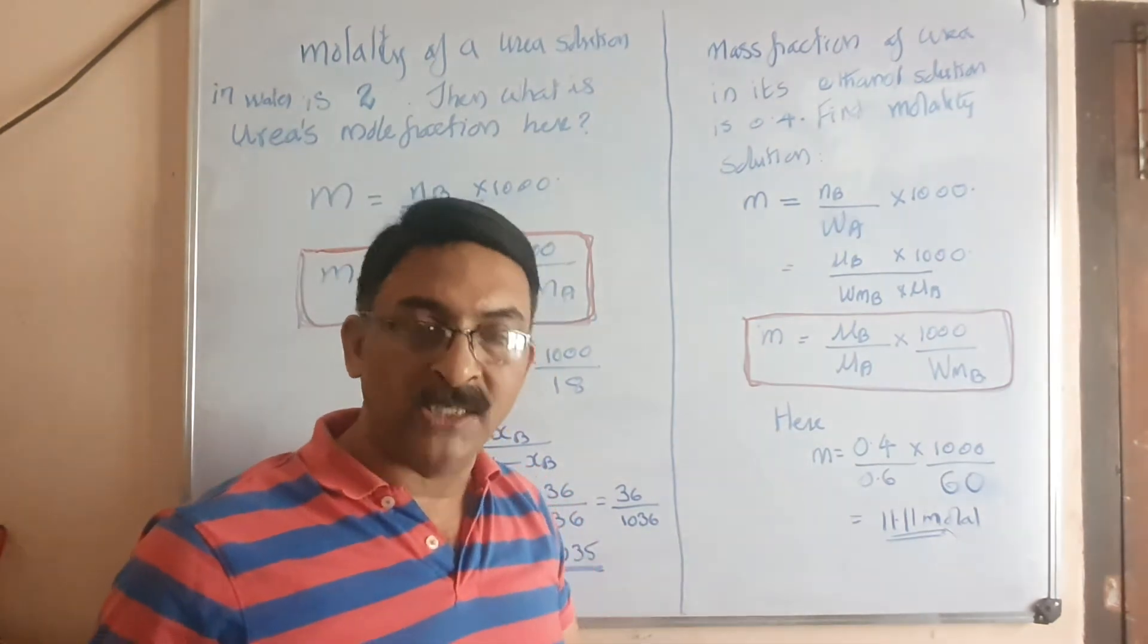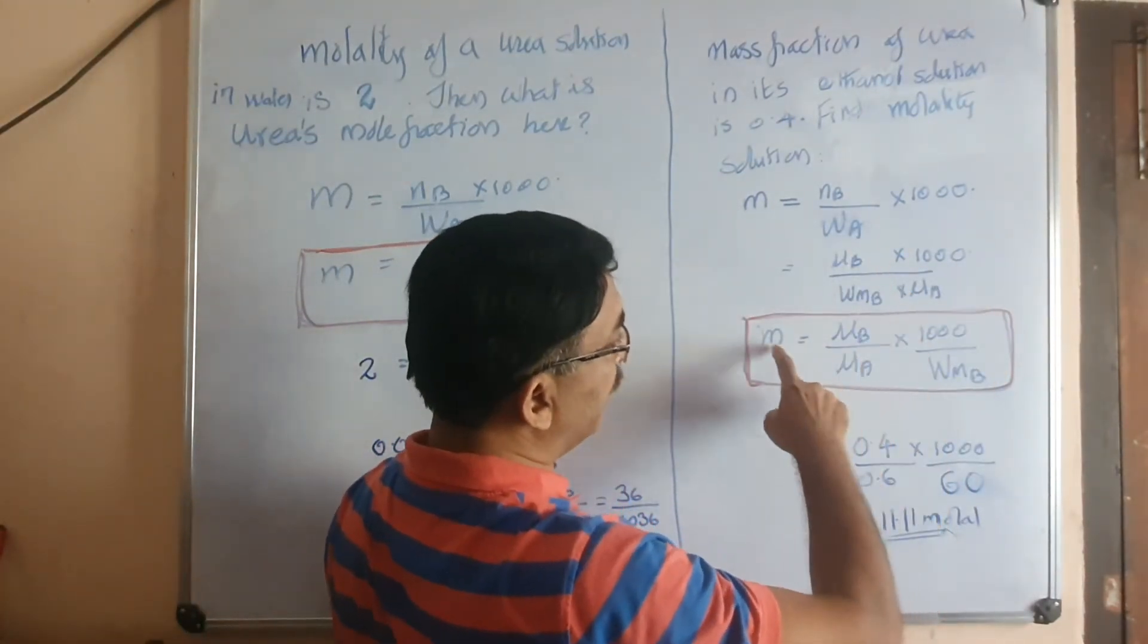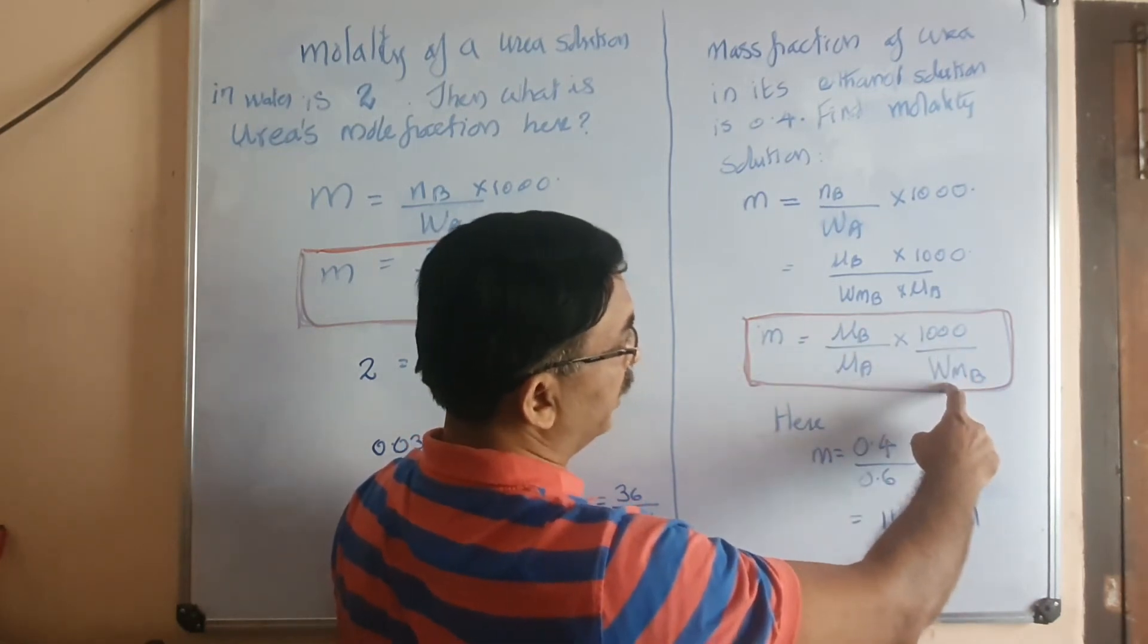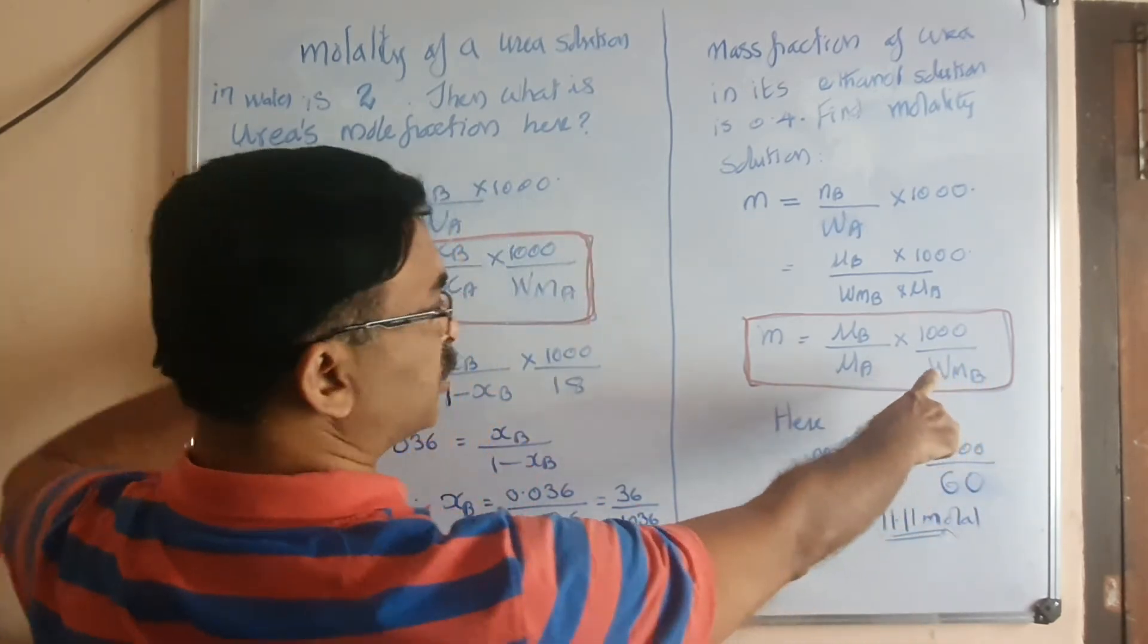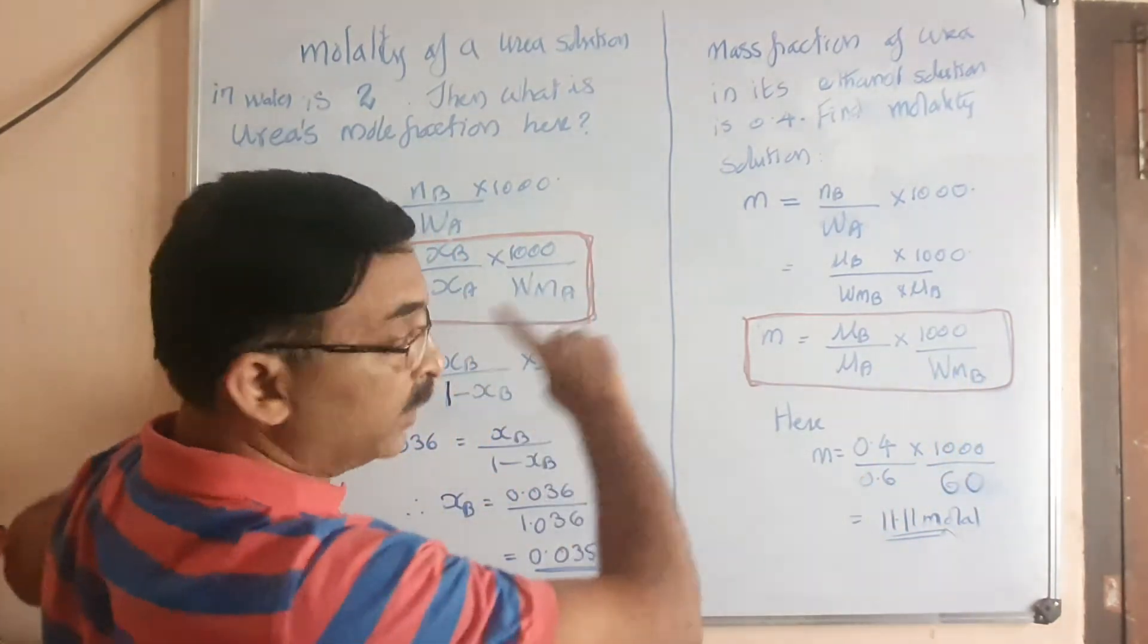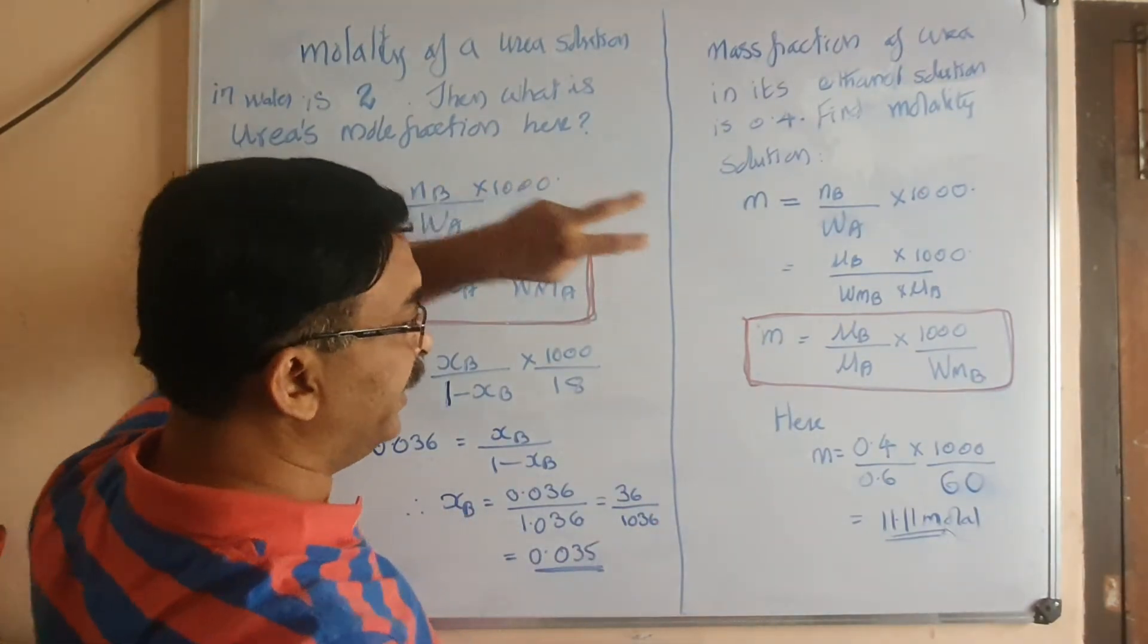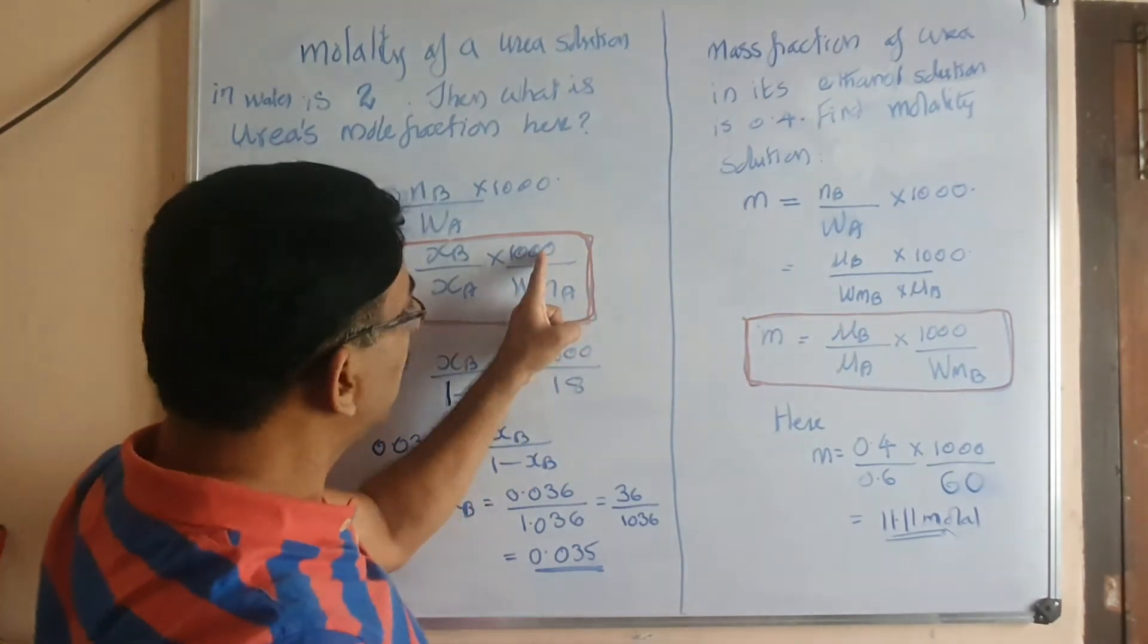So instead of mass you are using the mass fraction. After rearranging, you get m equals μb by μa times 1000 by wmb. Compare these two equations, very easy to compare and remember. Here it is xb by xa, here it is μb by μa, both with 1000.